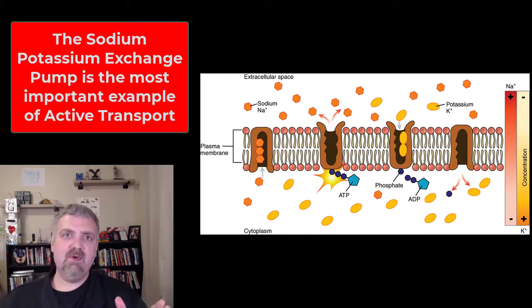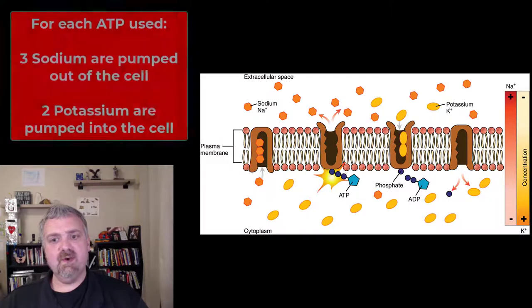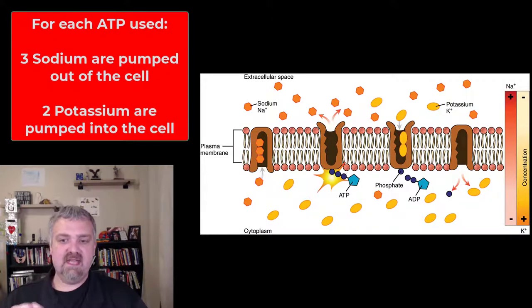Here you see the best example of active transport in the human body. This is what's known as the sodium-potassium exchange pump. So what this is going to do, you see at the bottom there as ATP is being used, for every ATP being used...